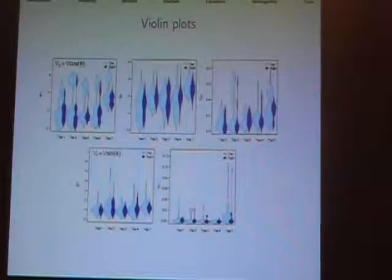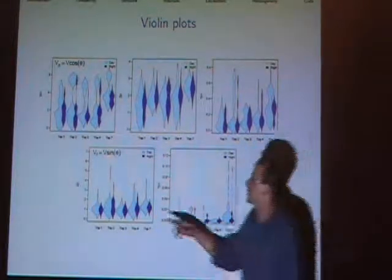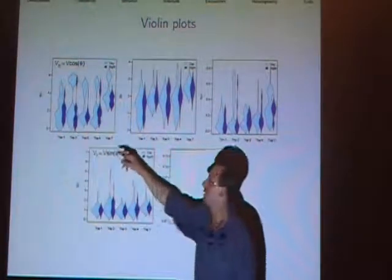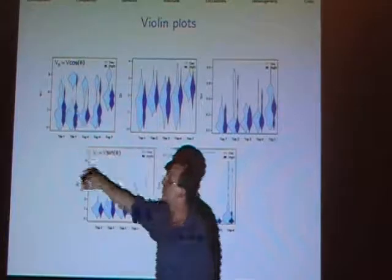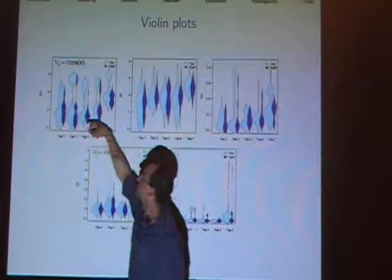We can distill this into just seeing what happens, what are the distributions of these parameters. These are the speeds, and these are violin plots. The reason I choose violin plots instead of box plots is you can see an idea of what the distribution looks like. You can see that trip two, or all these trips, they have clumps of behavior.